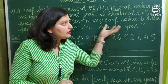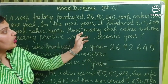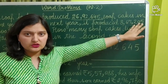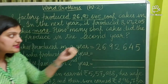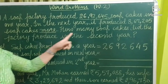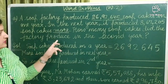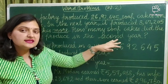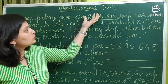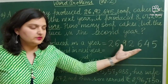Similarly, we will do for the bigger numbers. In the first year it made that many, and in the next year it is making 8,67,205 more than that. So for the second year, we need the addition of both numbers.